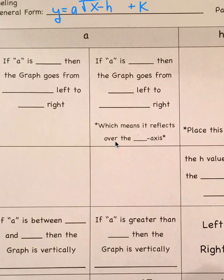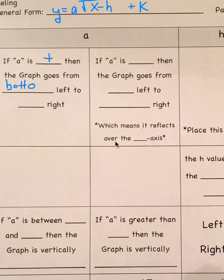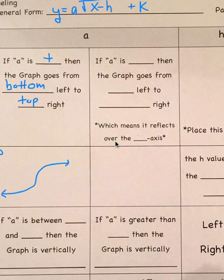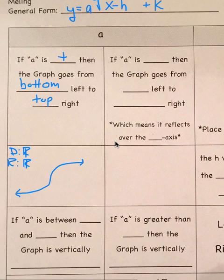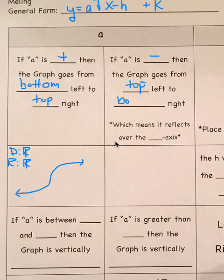When a is positive, we can't say it opens up or down because it has an inflection point — it goes from the bottom left to the top right. The domain and range are both all reals. If a is negative, the graph goes from the top left to the bottom right, basically going downhill. This also means it reflects across the x-axis.